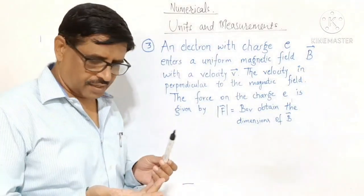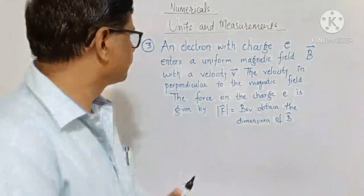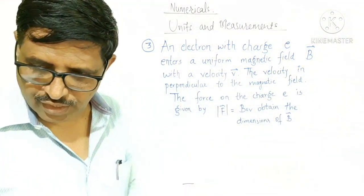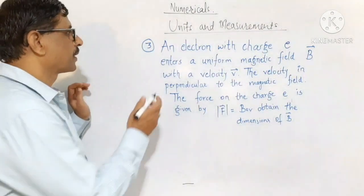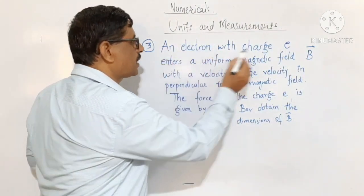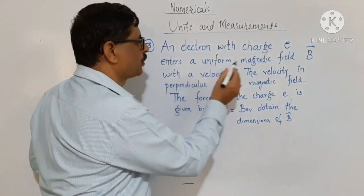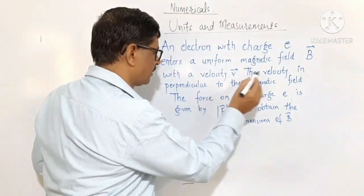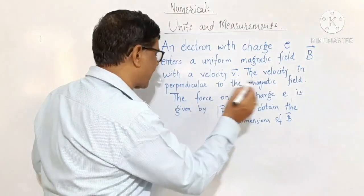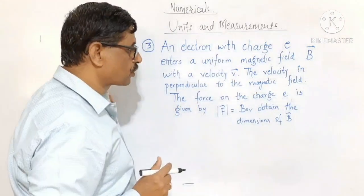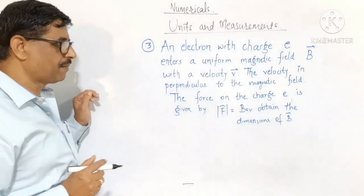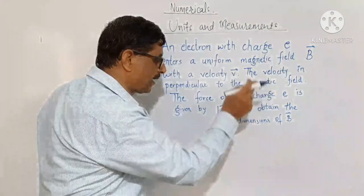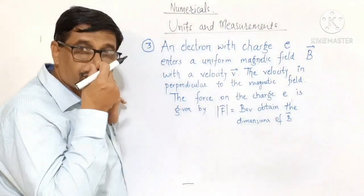This is again a good numerical. I will read the numerical first and then we will see how to solve it. An electron with charge E enters a uniform magnetic field B with a velocity V. The velocity is perpendicular to the magnetic field. The force on the charge E is given by the magnitude of force F equals B into E into V. Obtain the dimensions of B.